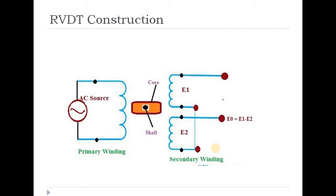The construction of RVDT is the same as LVDT, with some differences. LVDT uses a linear cylindrical core while RVDT uses a rotary core connected to a shaft. It has the same primary windings and secondary windings S1 and S2. The output E0 is equal to E1 minus E2. The working principle regarding EMF induction is the same as LVDT.